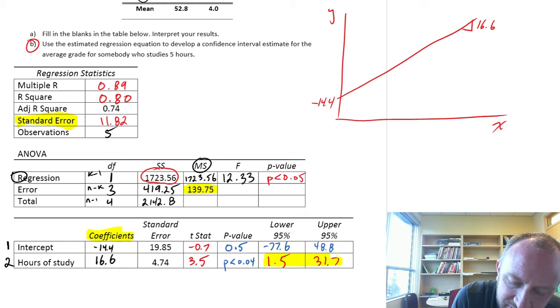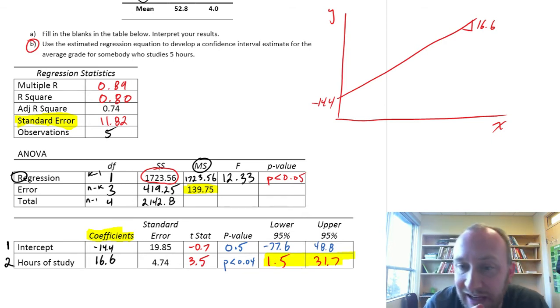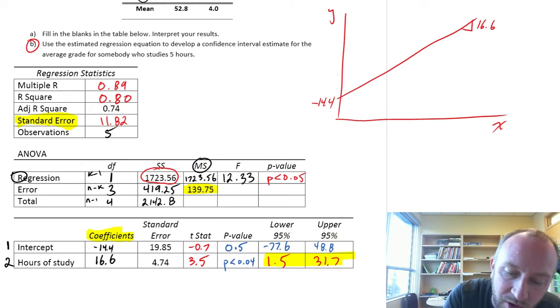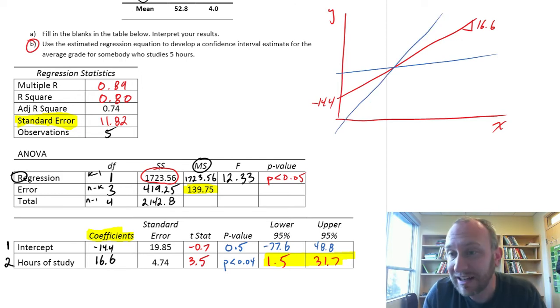a great deal of uncertainty in those estimates. And so what that means is that this line could be much flatter than it is, or it could be much steeper than it is. So as a point estimate,